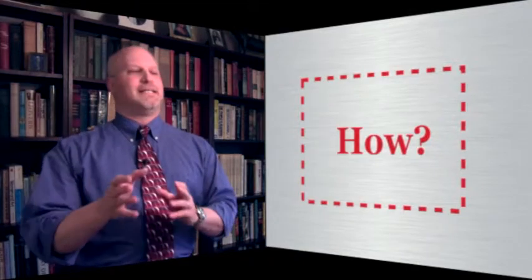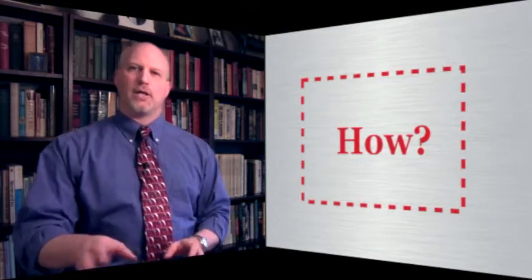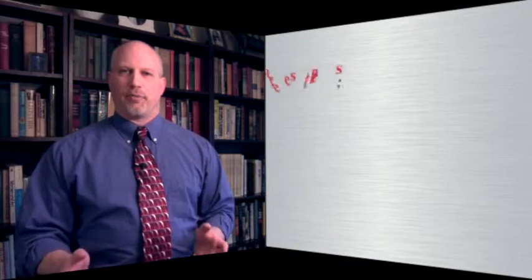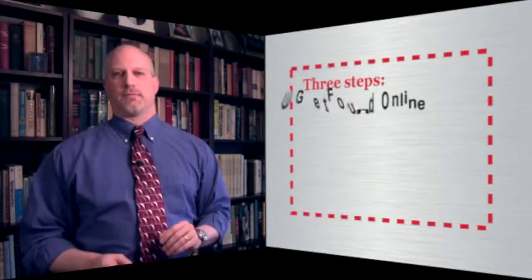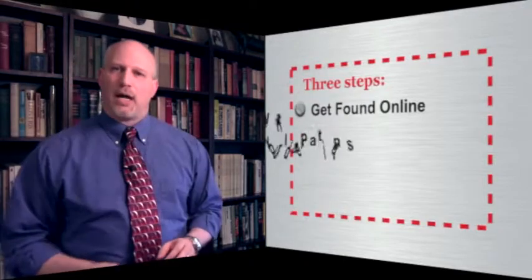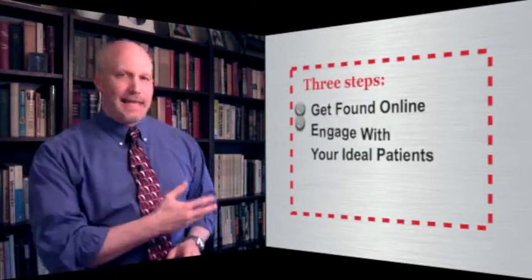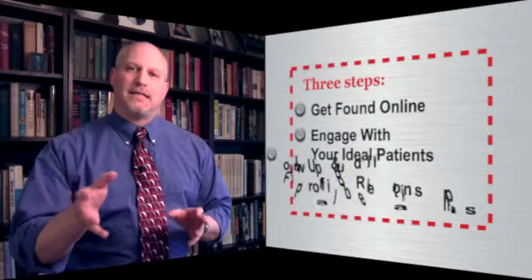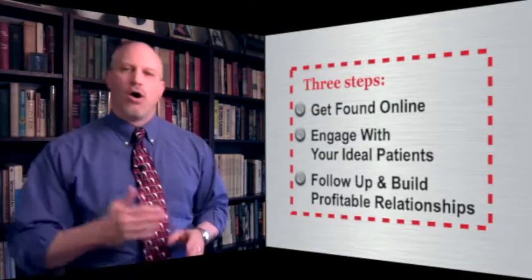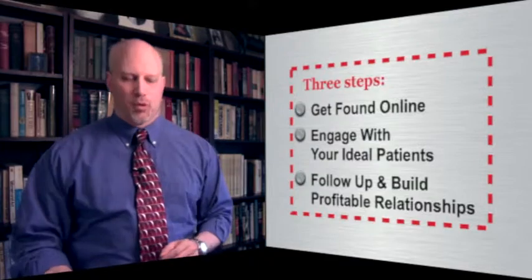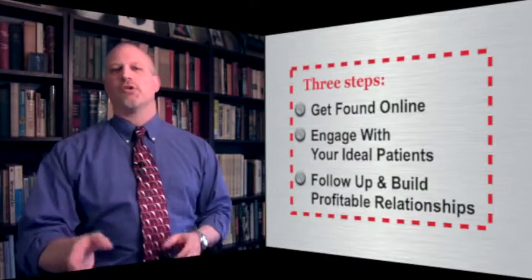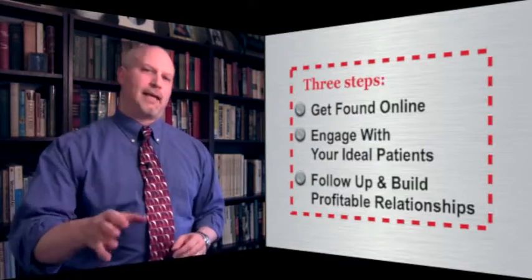Okay, so what exactly do you need to do to become the dominant force in your expert niche and in your geographic area of practice? Well, you need to achieve three strategic outcomes. You need to get found online. You need to engage with your audience of ideal patients and then you need automated systems that follow up and follow up and then follow up some more to bring people to your practice already knowing, liking and trusting you.